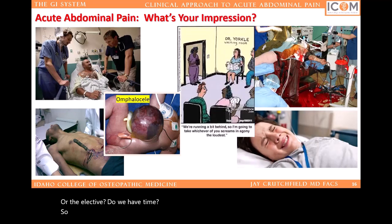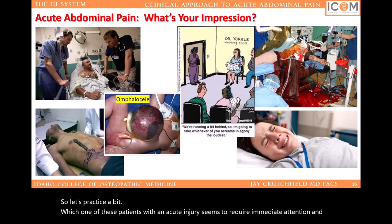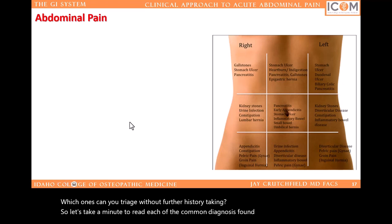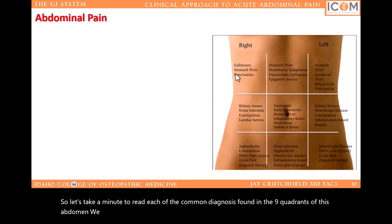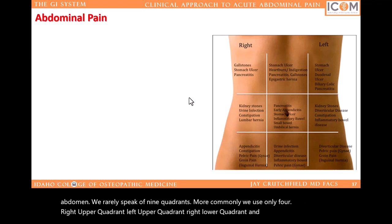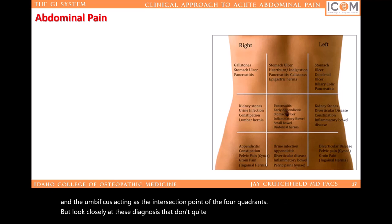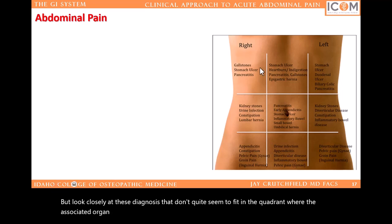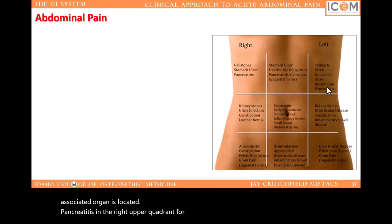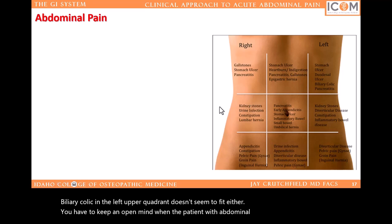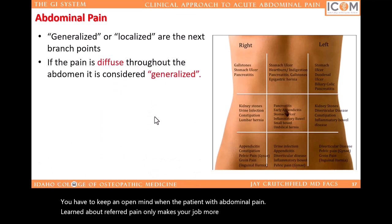Let's take a minute to read each of the common diagnoses found in the nine quadrants of this abdomen. We rarely speak of nine quadrants — more commonly we use only four: right upper quadrant, left upper quadrant, right lower quadrant, and left lower quadrant, with the umbilicus acting as the intersection point. But look closely at these diagnoses that don't quite seem to fit in the quadrant where the associated organ is located. Pancreatitis in the right upper quadrant, for example. Biliary colic in the left upper quadrant doesn't seem to fit either. You have to keep an open mind when assessing the patient with abdominal pain.